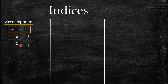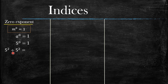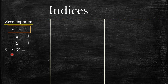How about when you have 5 raised to the power 2 divided by 5 raised to the power 2? Remember from the previous video — I will be putting a link in the description below — when we see a division sign here, we can't just start with the zero exponent law. We have to deal with the division law first. The division law of indices states that if the bases are the same, we subtract the exponents.